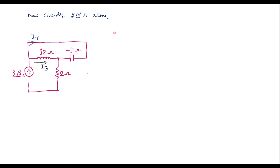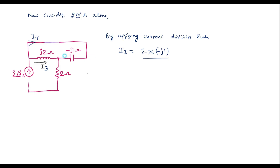Again, apply the current division rule. Current I3 = total current × opposite resistor / sum of resistors. Total current is 2 amps. The opposite resistor is the one in which I4 flows, which is -j1. So I3 = 2 × (-j1) / (j2 + (-j1)) = 2 × (-j1) / j1 = -2j / j. Here j cancels, and we get I3 = -2 amps.